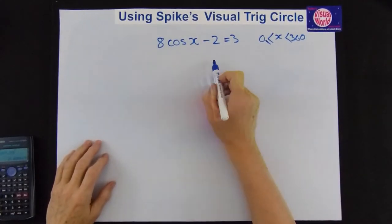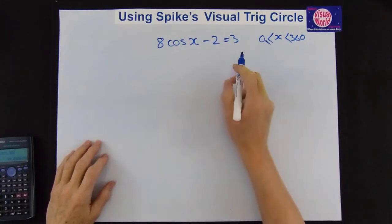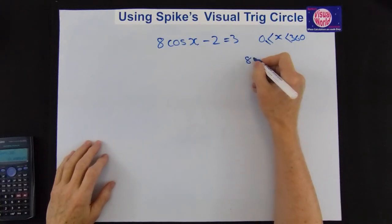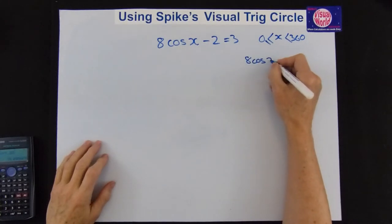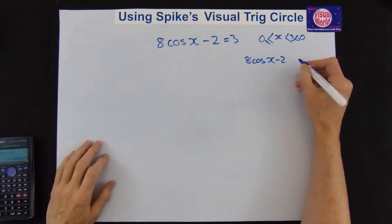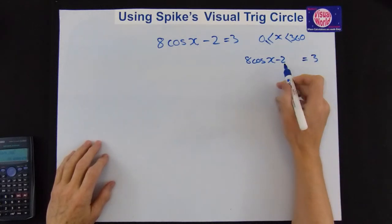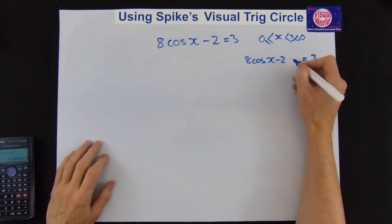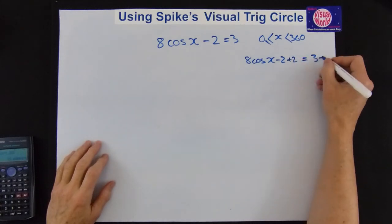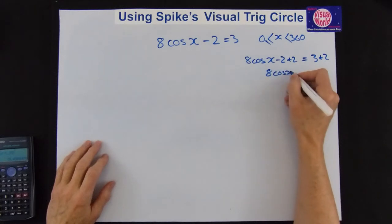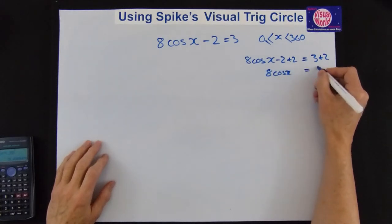The last one we're going to do is this equation here. So we can just get started. Treat the cos x as if it's x. So we get 8 cos x minus 2. Leave the space for working. Equals 3. We've got to get rid of the minus 2. So we add 2 to both sides. So we get 8 cos x equals 5.